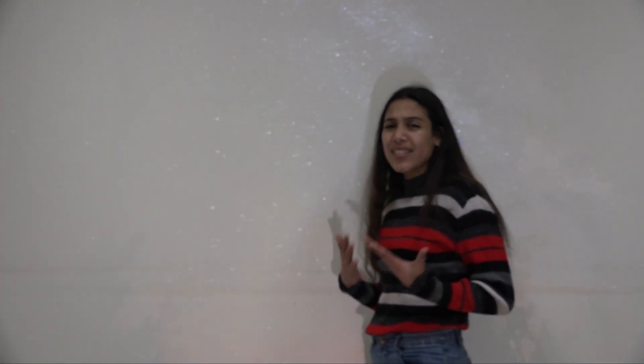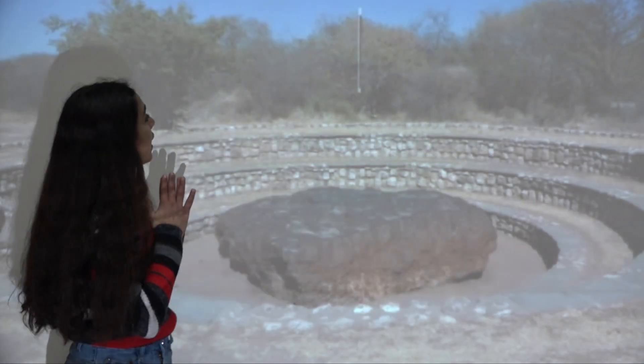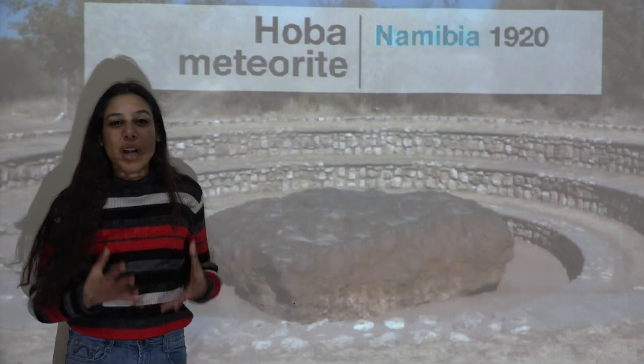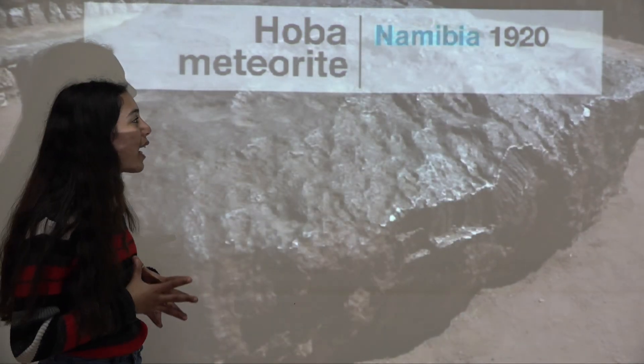However, some meteoroids are as large as boulders. The largest meteorite found on Earth's surface is called Hoba, discovered in Namibia in 1920, and it weighs roughly 190,000 pounds.